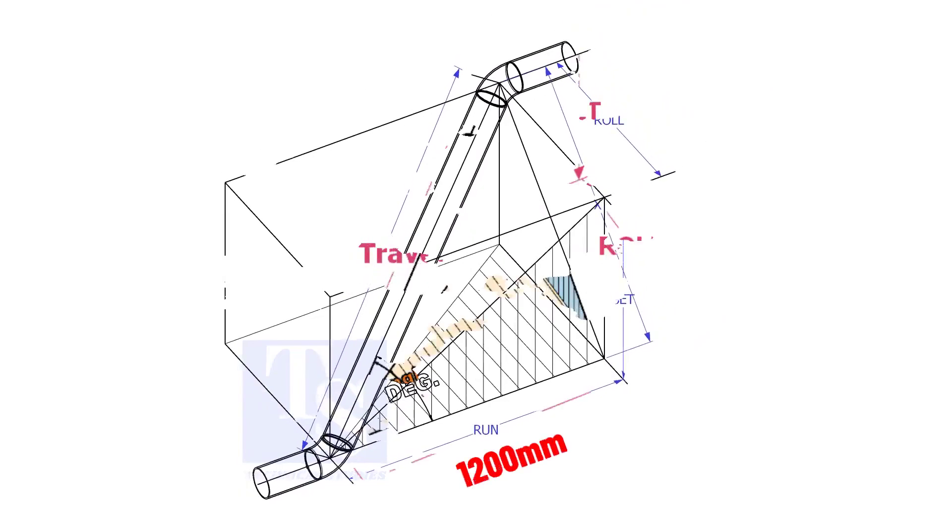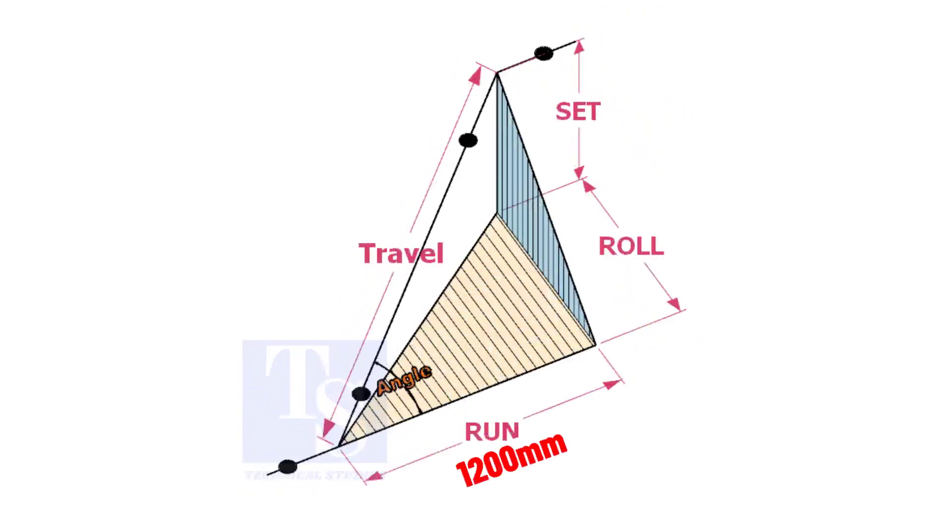Assume that the run is 1200 mm, set is 1000 mm and the roll is 800 mm. Calculate the travel length.